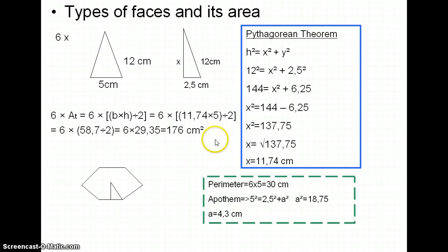So now that we know the height we can calculate the area of the triangle. So the area of the six triangles equals six times one triangular area, so six times (base times height) divided by two, equals six times (11.74 times 5) divided by two, is the same as six times (58.7 divided by 2), equals to at the end 176 square centimeters.